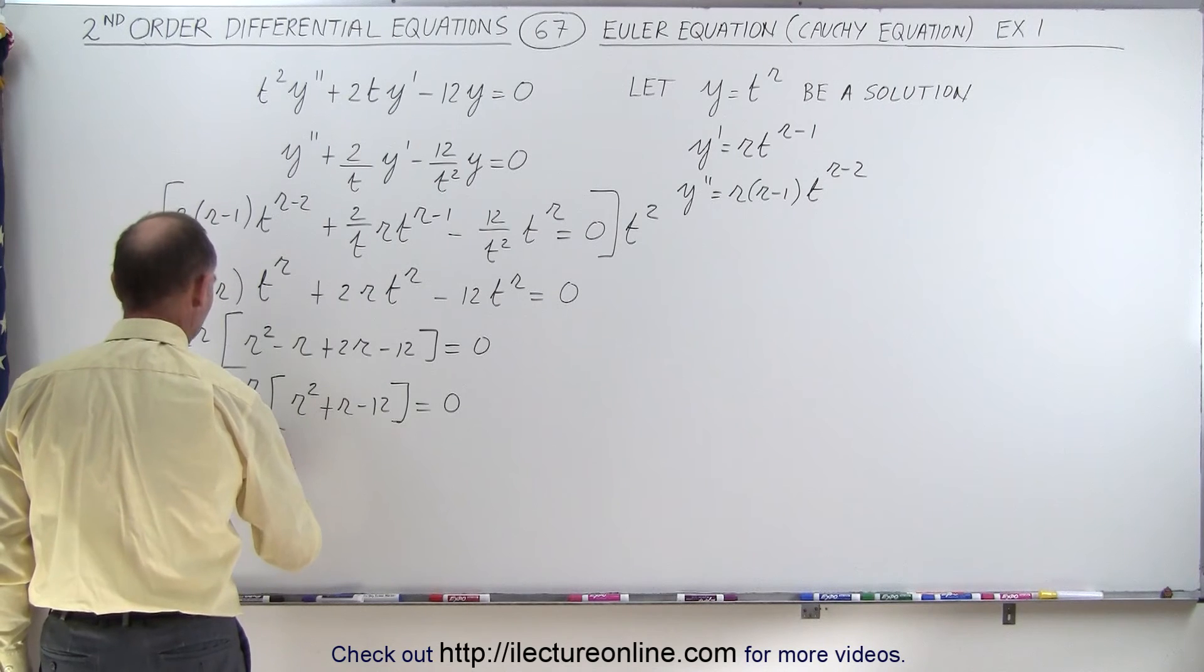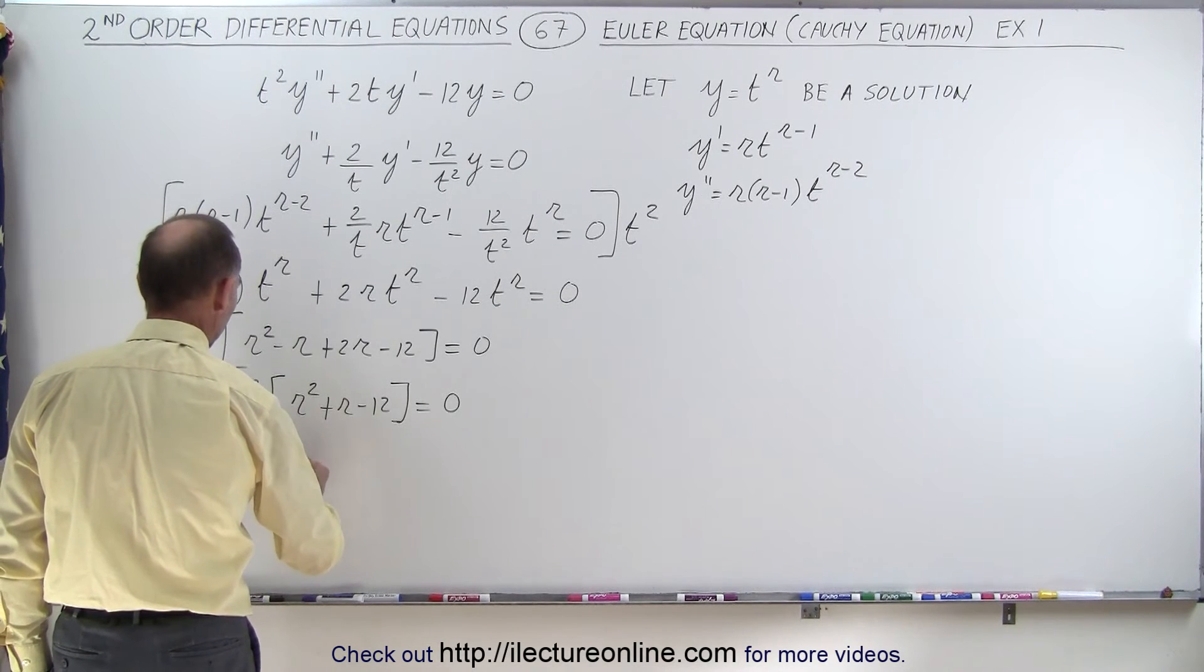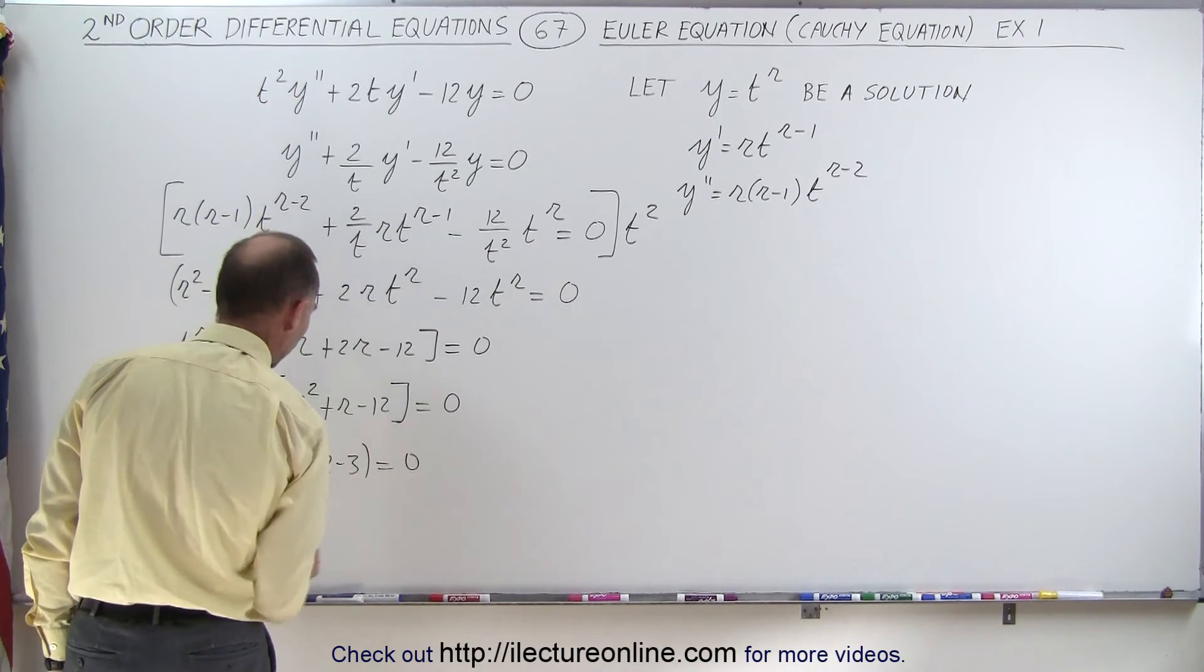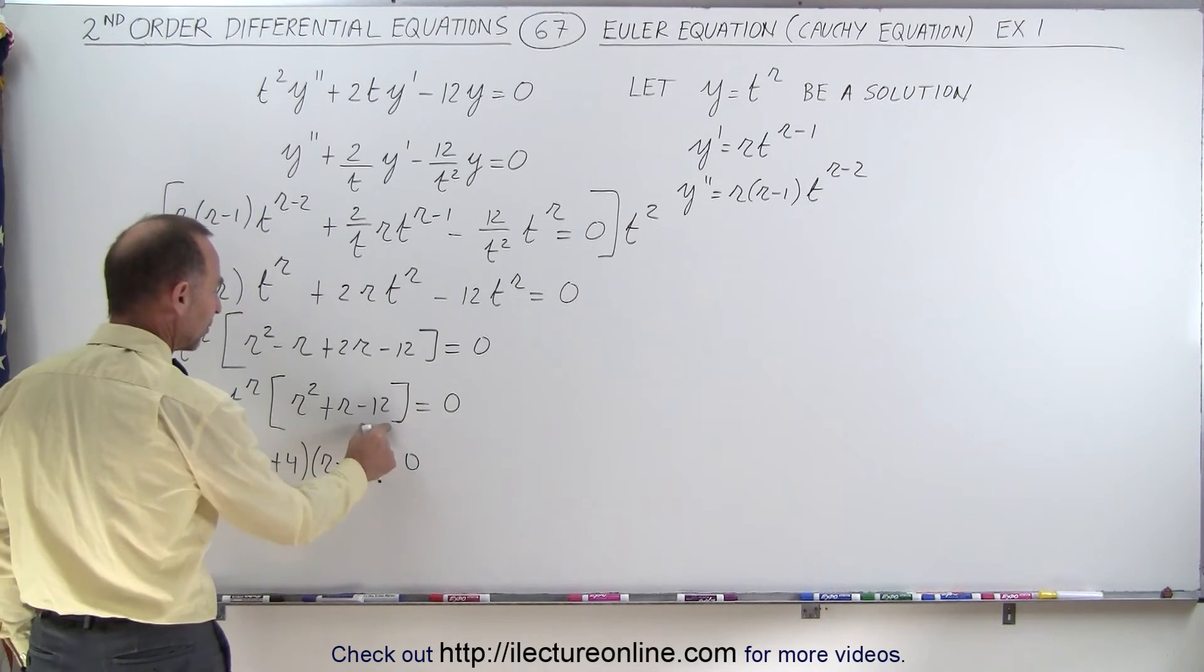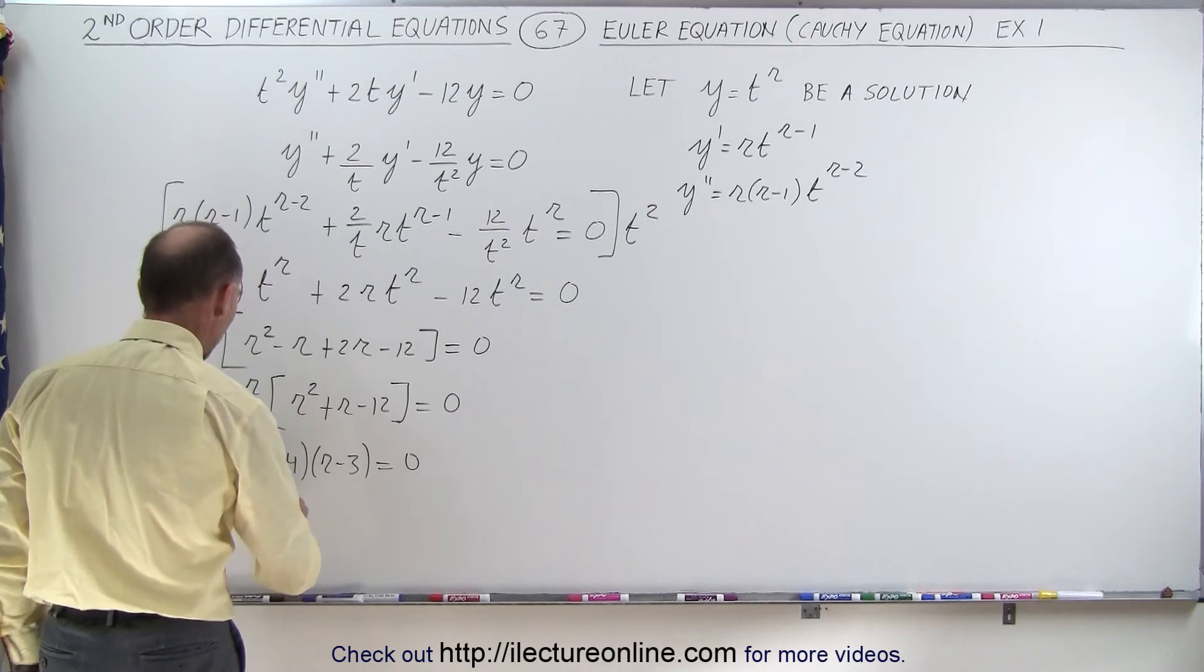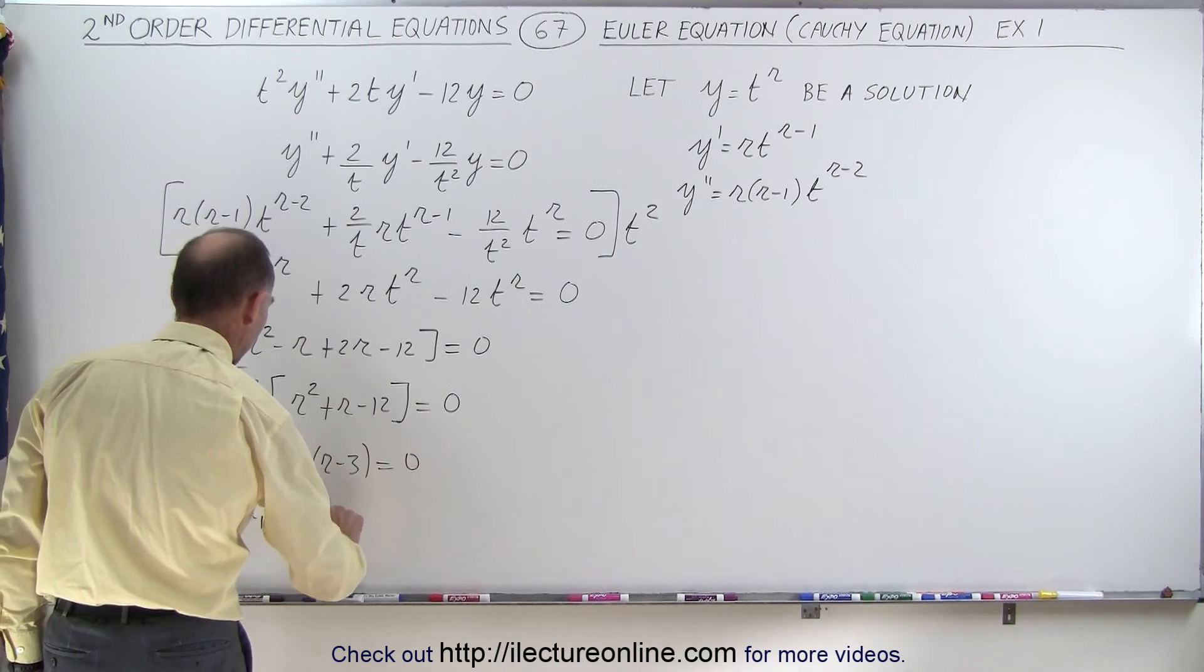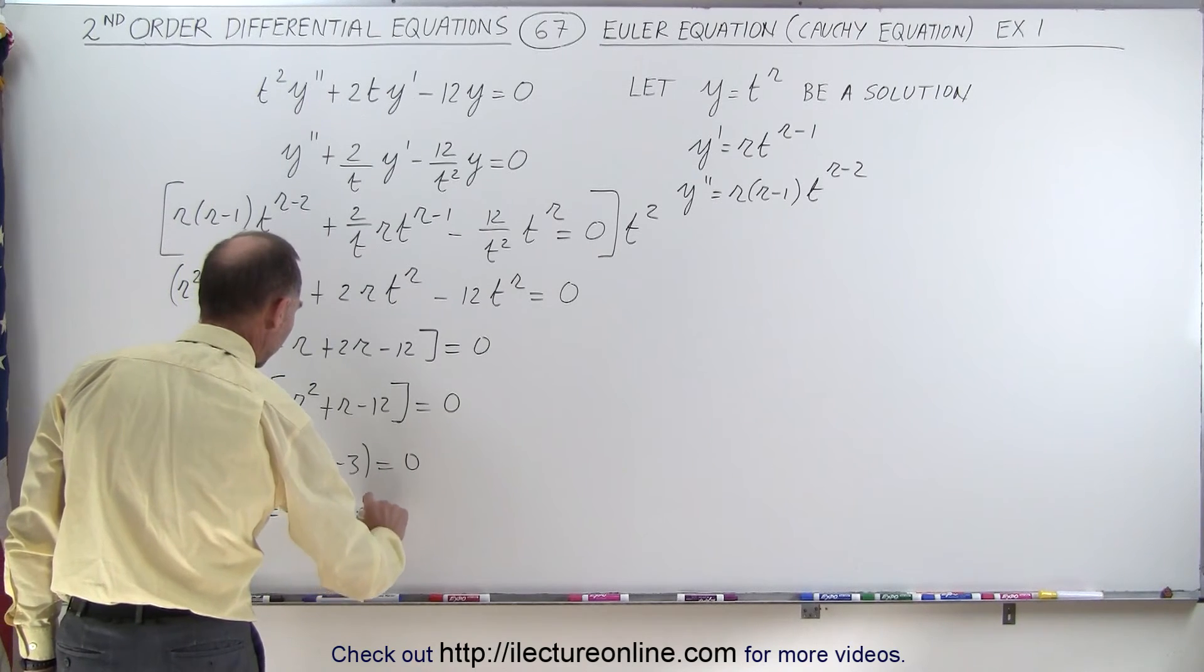We can factor that, so this can be written as (r+4)(r-3) = 0, because 4 times negative 3 is minus 12. Add these together, you get plus 1, which means that r₁ is equal to negative 4, and r₂ is equal to 3.